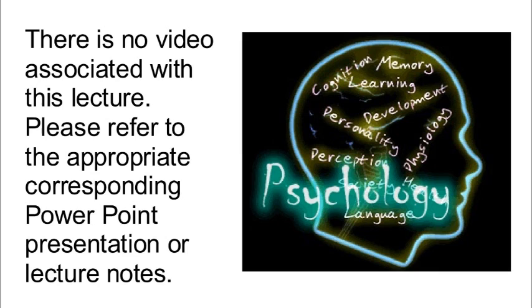The other factor in conformity is group unanimity — meaning, is the wrong decision unanimous? In Asch's original studies, everybody said the wrong answer, and in that situation people were much more likely to conform. But if there was just one dissenter — one person in the group who did not go along with the rest — then conformity went way down. When a group is unanimous, conformity is more likely; when there is at least one dissenter, conformity is much less likely.